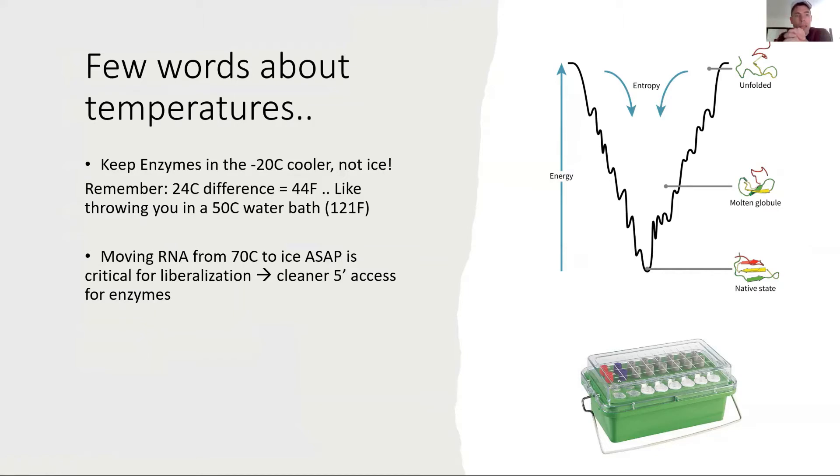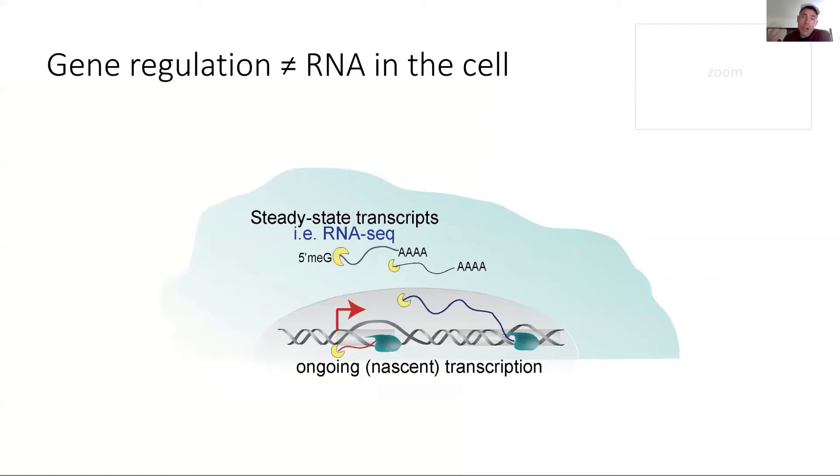This quick change from 70 or 75 degrees Celsius to ice needs to be as rapid as possible. In general, when we have samples going from ice to 37 degrees, it's best to directly move them from ice to 37 degrees. Every time there is a temperature shift, let's make that as rapid as possible.